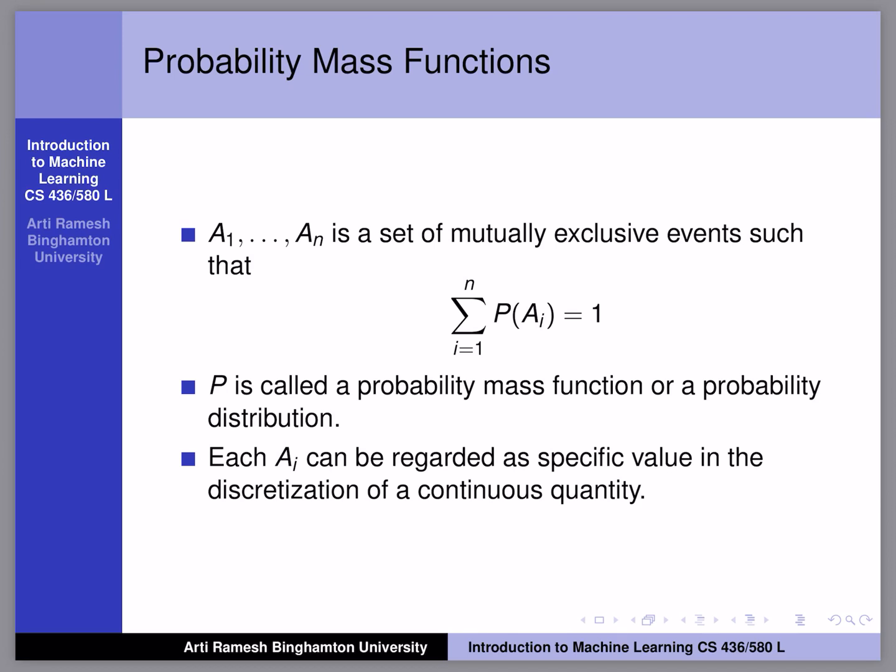In the coin example again, if you have P of A equals heads, P of A equals tails, separately both events, then both of these have to add up to 1 because a coin can either land a head or a tail. So whenever it has not landed heads, it has landed tails, so it has gone to the other event. So what is the combined probability of this together? It has to be 1.